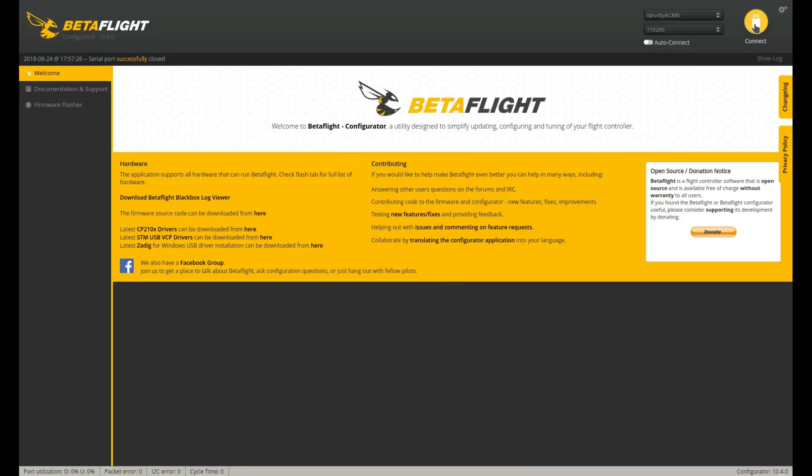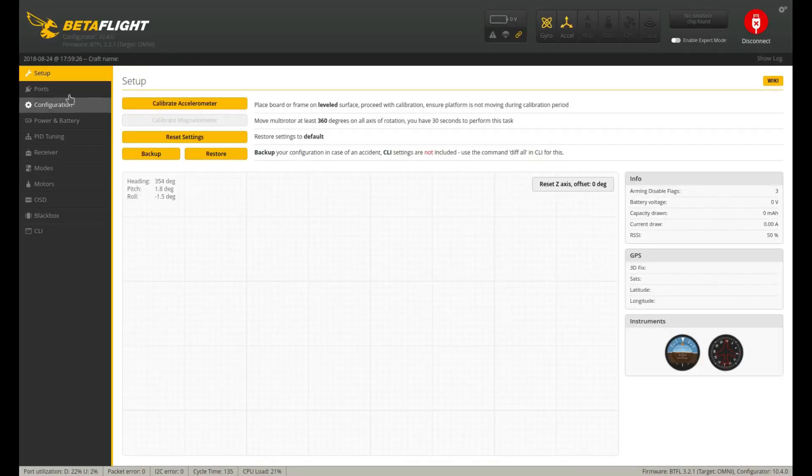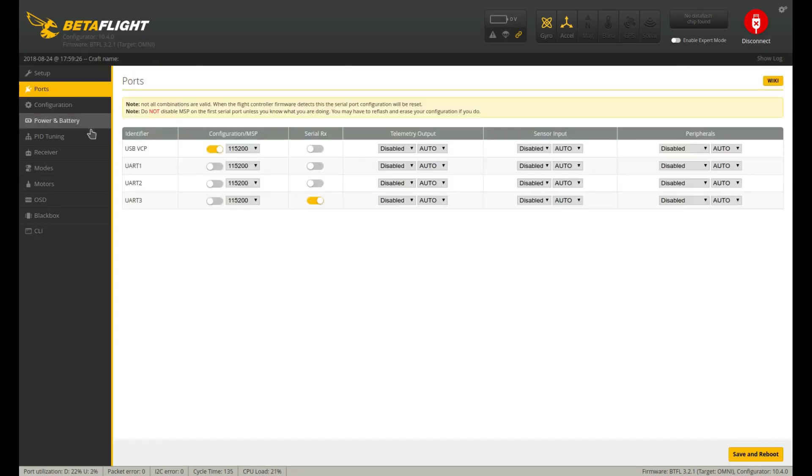Once connected, the setup in Betaflight is easy. Simply go to the Ports tab, identify the UART that you connected the smart audio cable to, and turn on TBS smart audio under the peripherals column. Leave the speed set to auto.